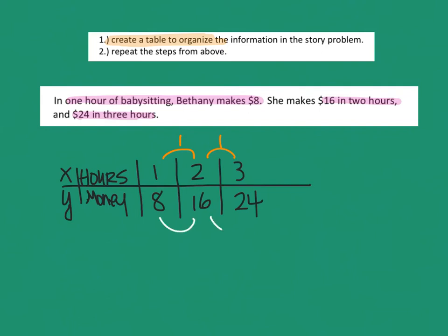I'm going to go through the y's from 8 to 16. If I subtract those, that's 8 away from each other. And then if I do 16 and 24, and I subtract that, it's also 8.